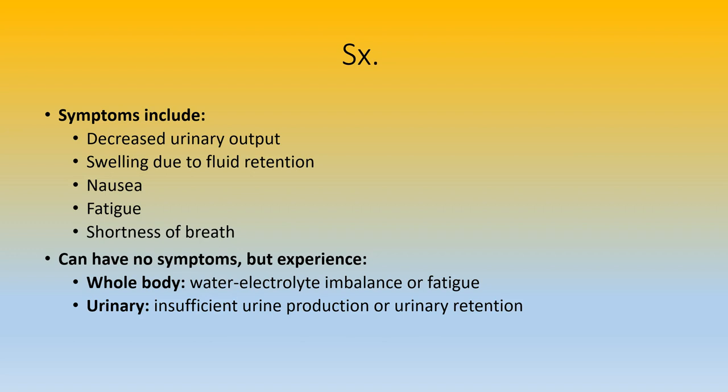Symptoms of acute renal failure include decreased urinary output — if the patient is losing too much fluid, there's nothing to filter, the body holds on to what it can, and the kidneys don't filter anything out. Swelling due to fluid retention occurs when the kidneys aren't working correctly and fluid builds up in the system. The path of least resistance means fluid will first build up in the lungs, causing shortness of breath. Nausea comes from toxin buildup — if kidneys aren't filtering, there's an overabundance of toxins causing nausea and vomiting.